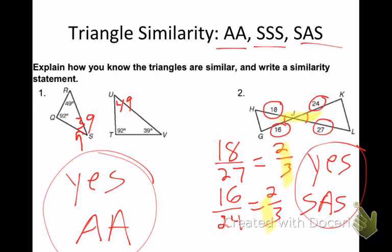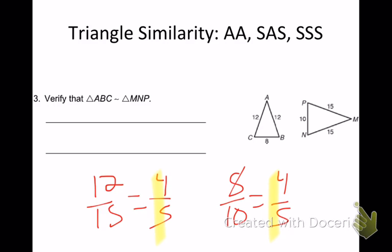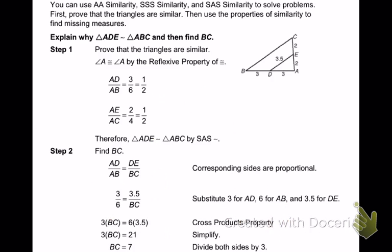When it says verify, it means find the proportions and then state which one of those three triangle similarity statements would be used. Take a couple seconds, work this one on your own. Trent Bannister, number three. How did you set up the proportion here? So you said 12 over 15, and what was the other one you set up? Are they the same? Yes. So is it proportional? Yes. By which statement? Side, side, side. Nice job.